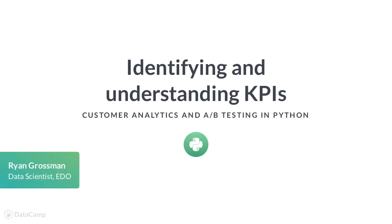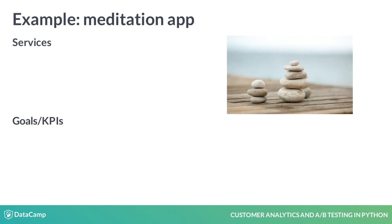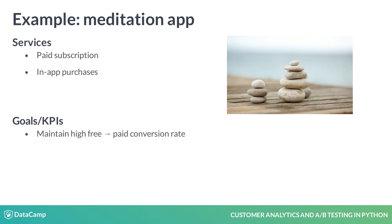Great work on the exercises. Now let's dive into KPIs. The example we will use throughout this course is that of a mobile app that offers meditation services for a paid subscription, as well as one-off in-app purchases. The app is growing quickly, and we are motivated to maintain a strong free trial to paying user conversion rate.